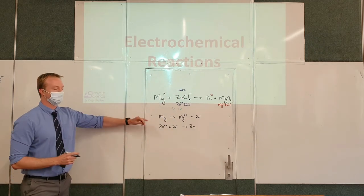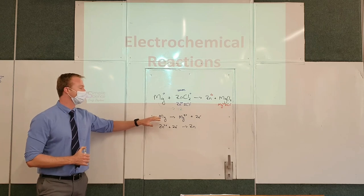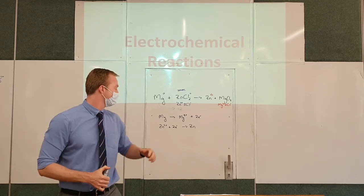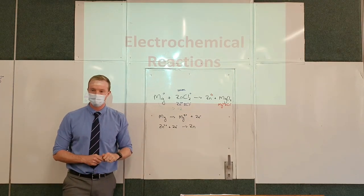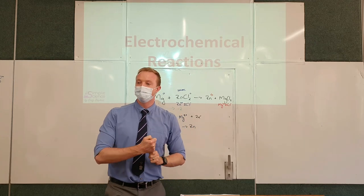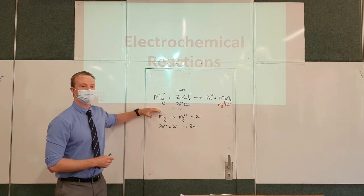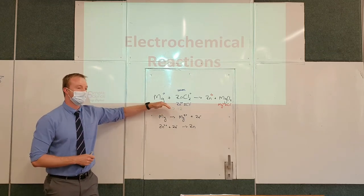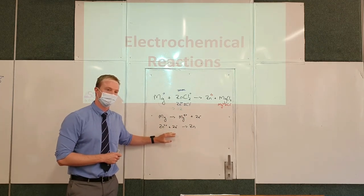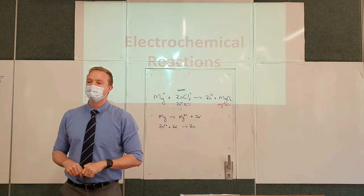These are referred to as half reactions. They are called half reactions because neither can happen on its own — magnesium cannot give away two electrons if zinc is not there to accept them. Just like a person can't give away a birthday present if there's no one to receive it. You need two half reactions for a whole reaction to take place.